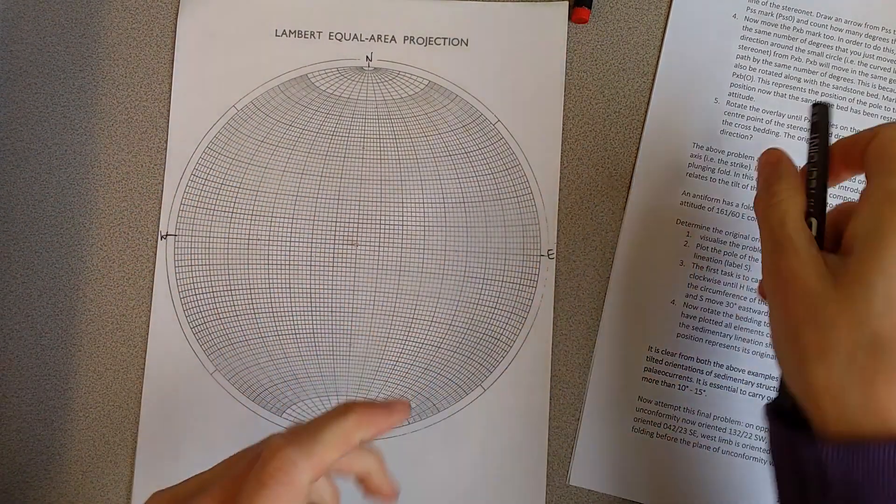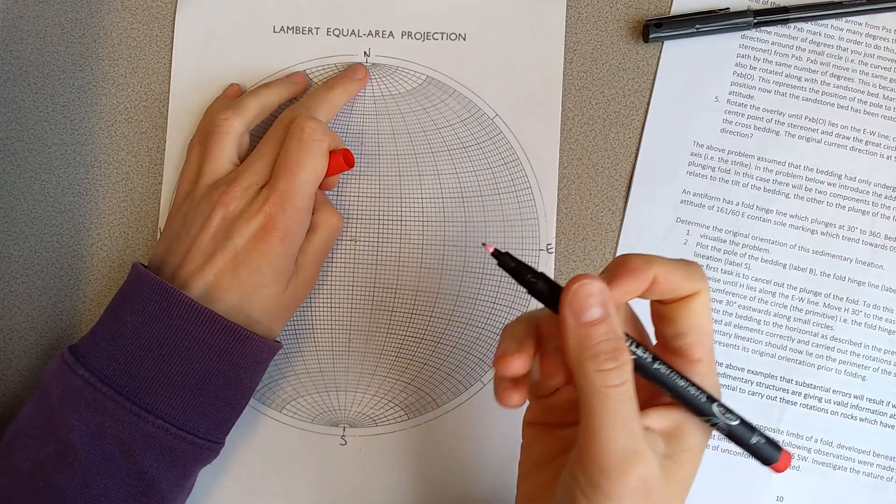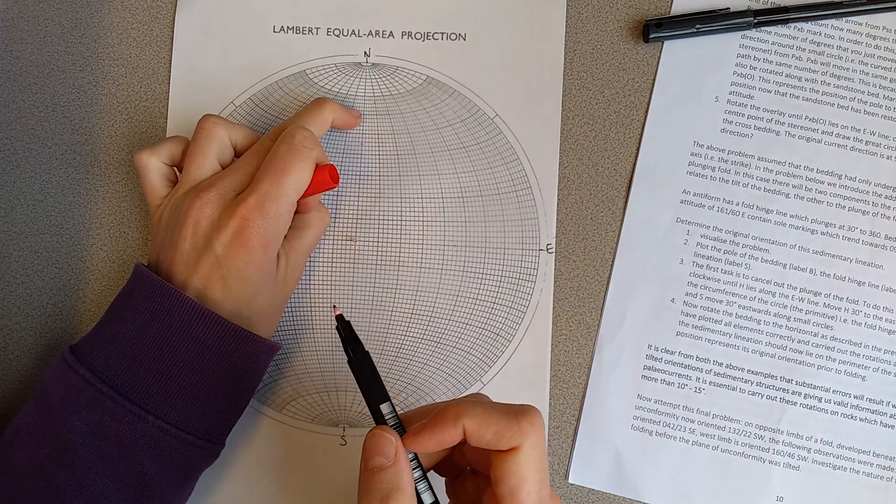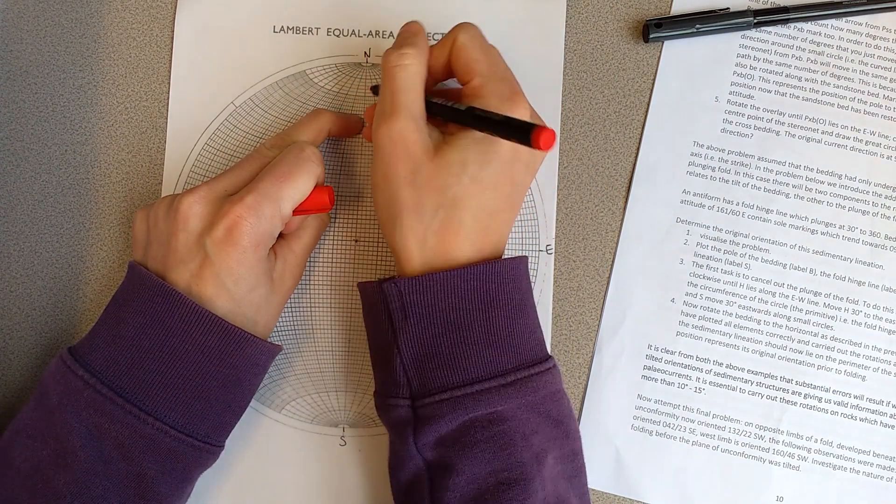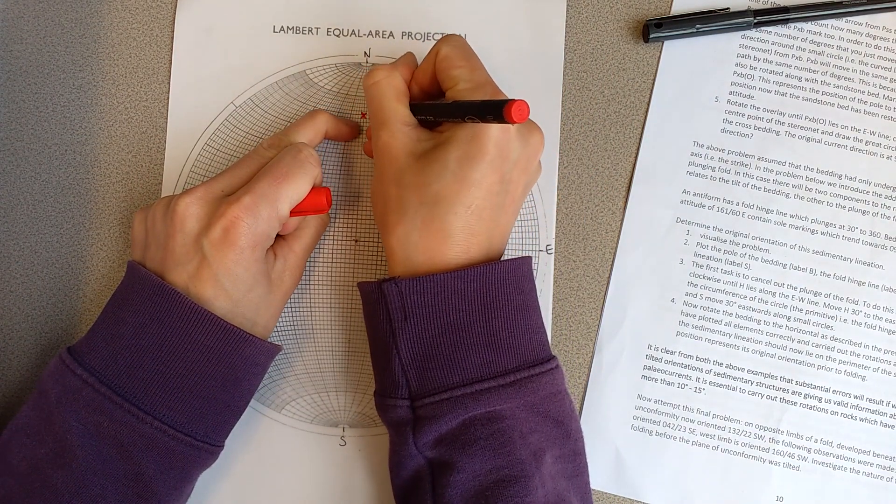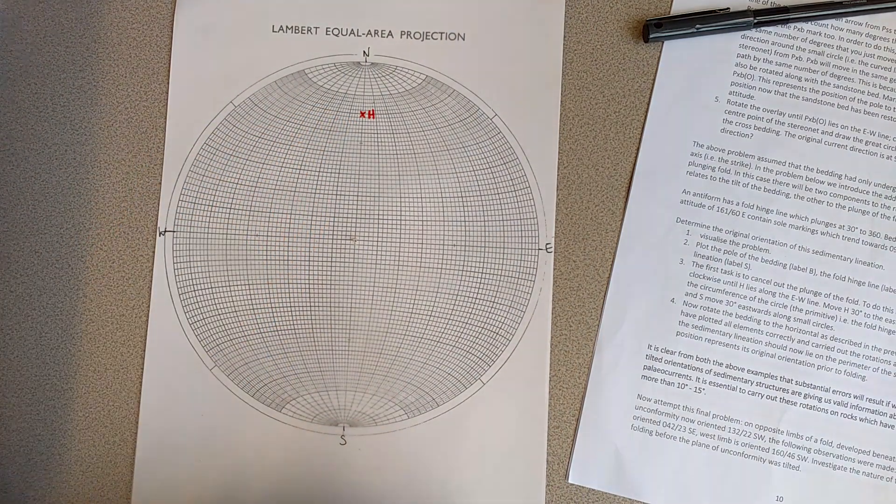So the hinge line is, as it's plunging 30 towards 360, we can count from 360, which is exactly north here, and I'm going to put across and I'm going to label H for hinge.